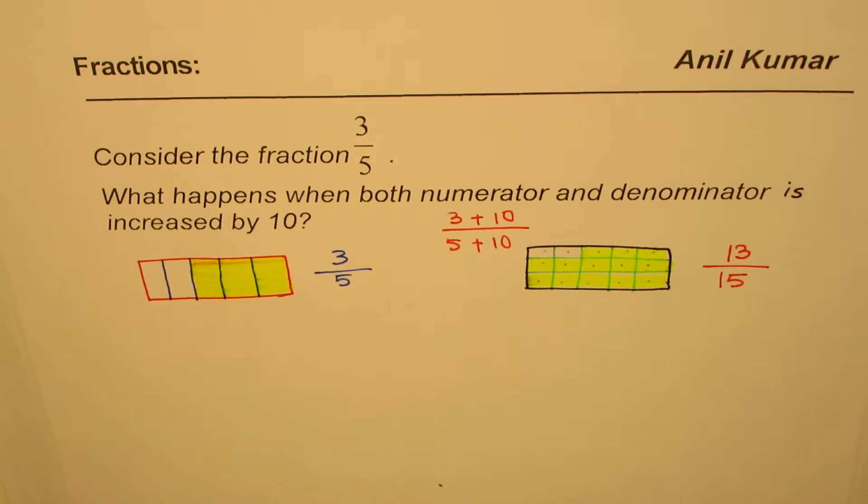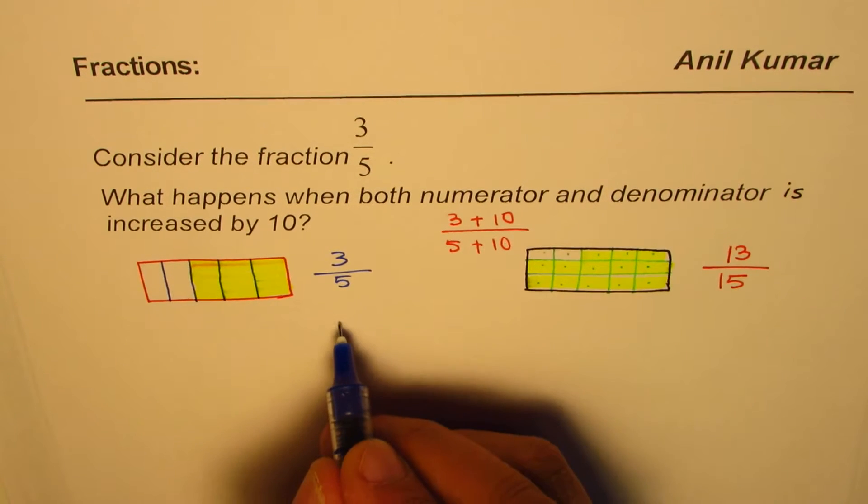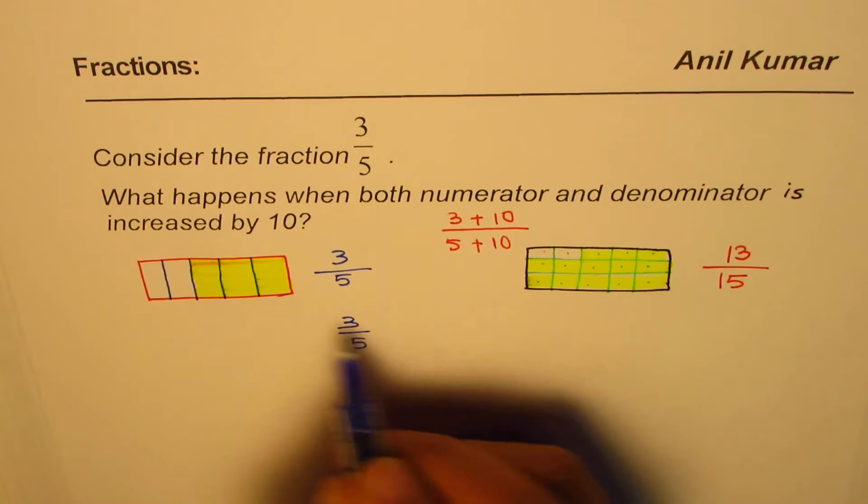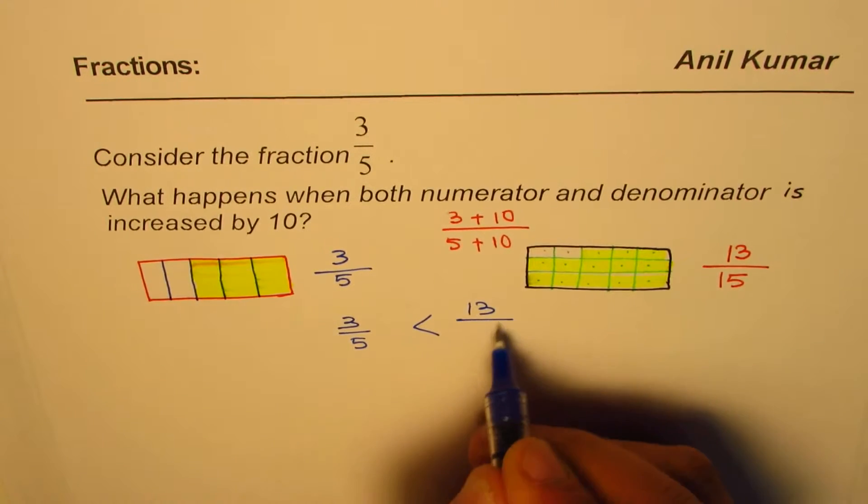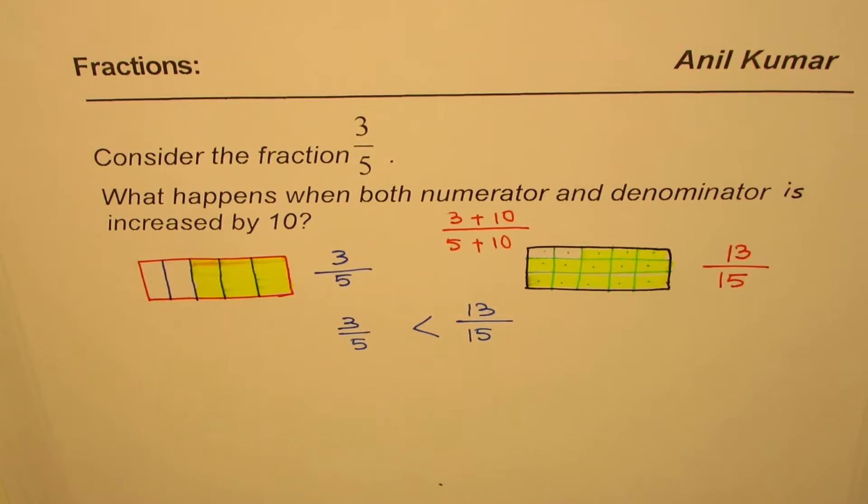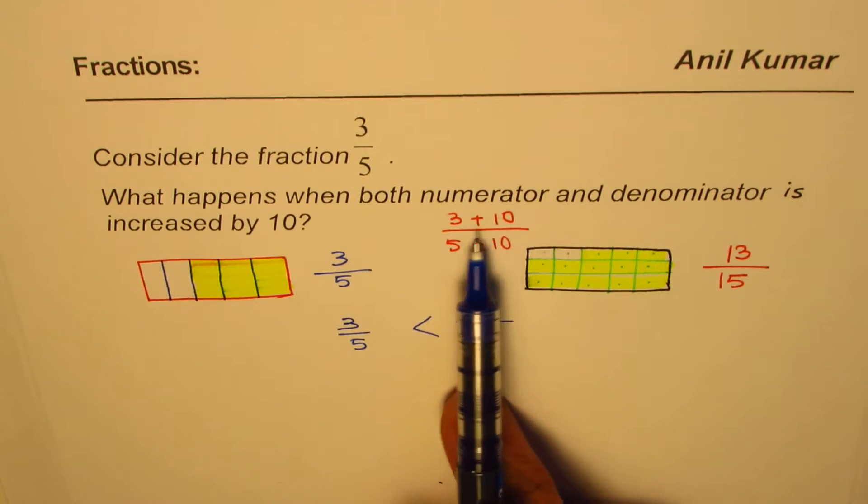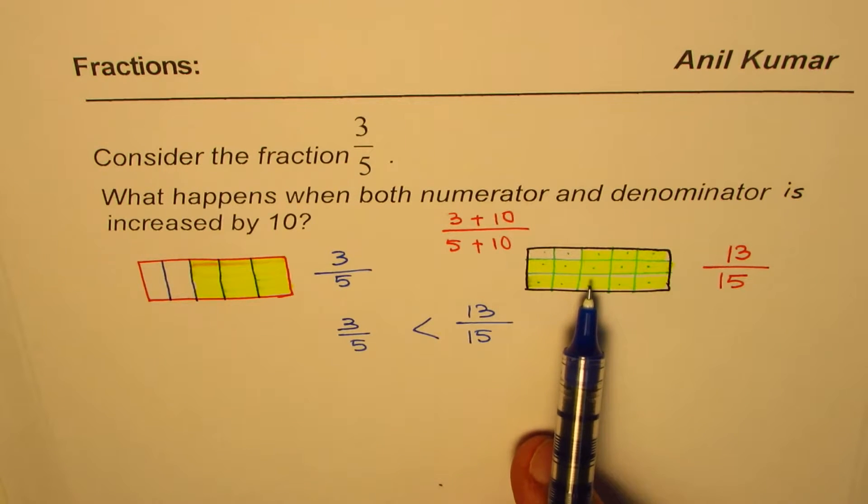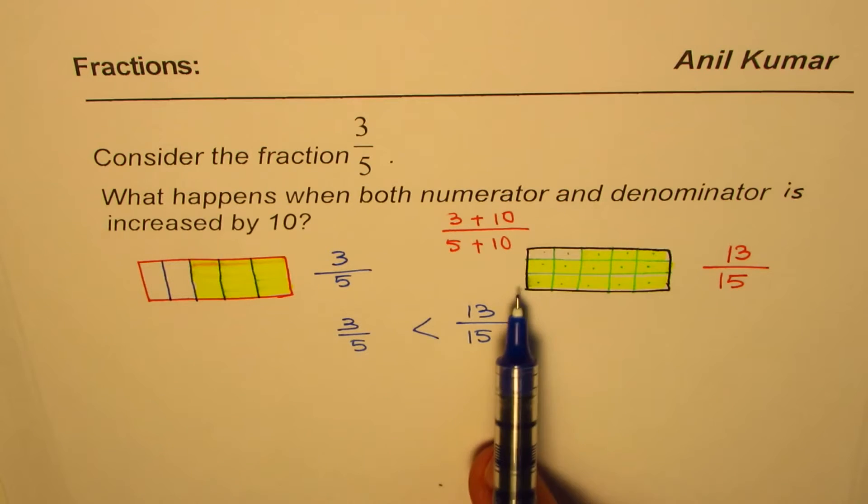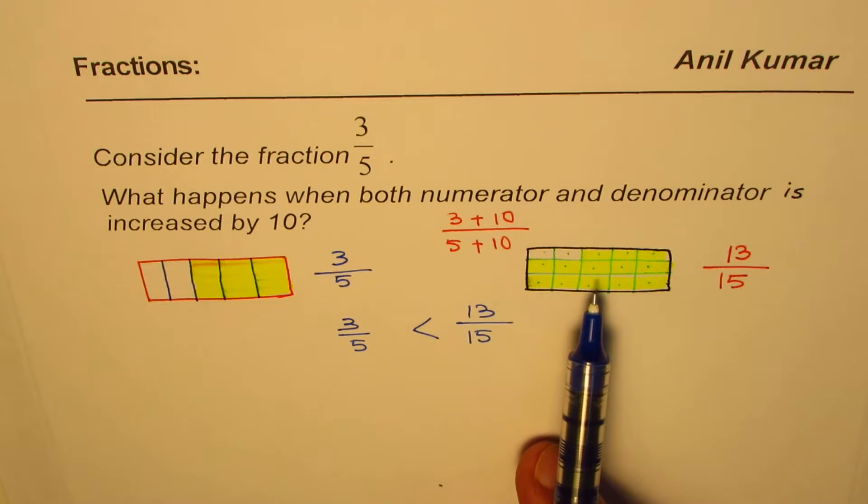So we get 13 out of 15. What do you see? We see that 3 over 5 is much lesser than 13 over 15. Do you see that? Yes, it is. So when you add same number to both numerator and denominator, the share increases. Do you get an idea? The share increases.